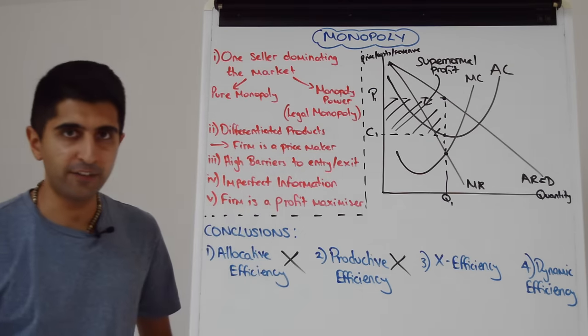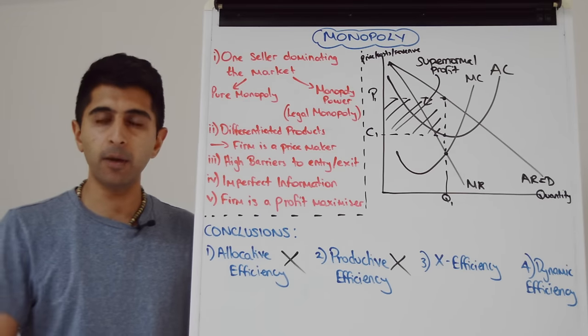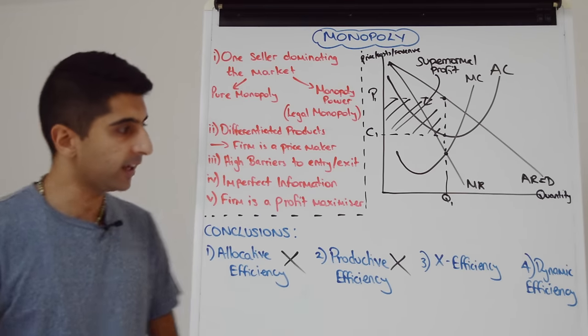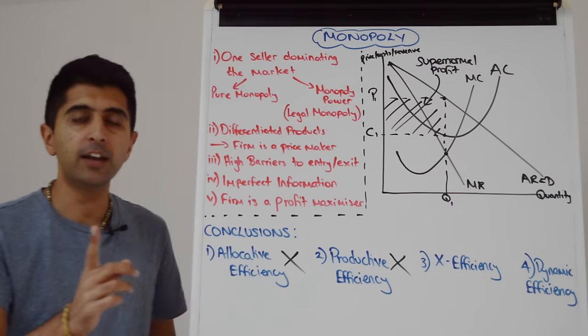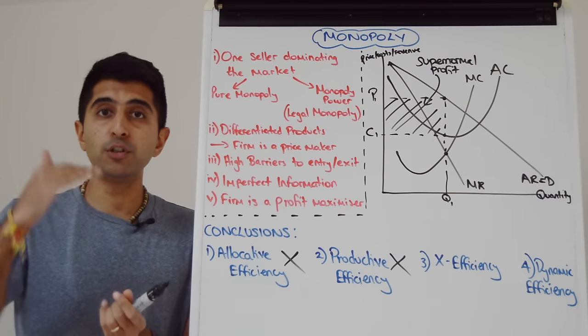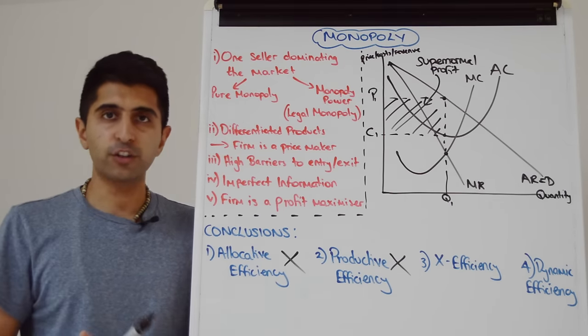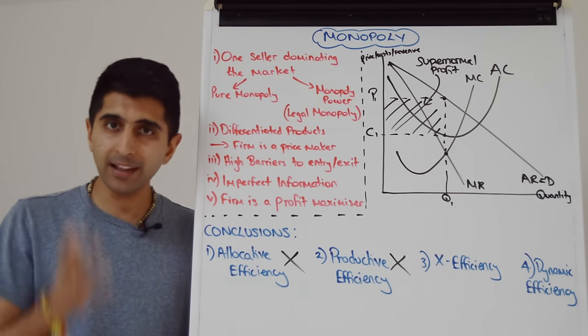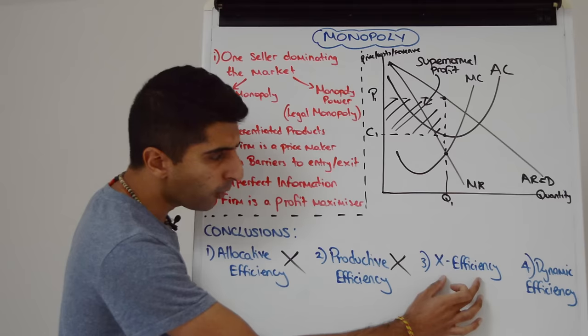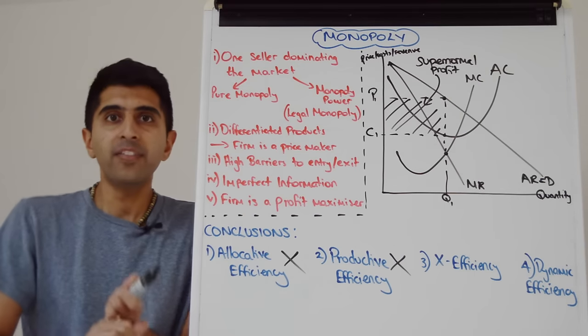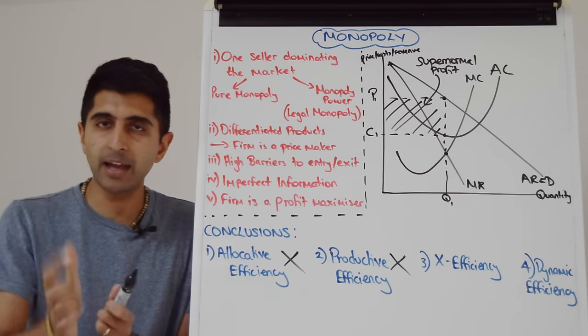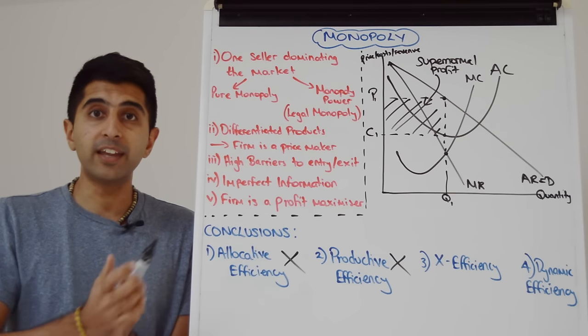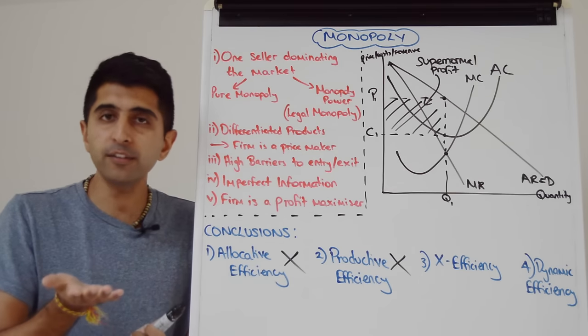We can also assume X-inefficiency. We can't see that from the diagram, but we can assume it with basic logic. Remember, X-inefficiency occurs when monopolists are producing beyond their average cost curve, above their AC curve, allowing for waste to creep in here. Excess costs. Why would a monopolist allow for this? Well, one reason, they become complacent with a lack of a competitive drive.